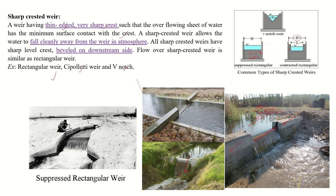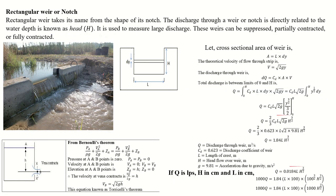In a contracted weir, the total canal width is larger compared to the crest length. A thin, very sharp edge is provided at the crest so that water flows cleanly and freely into the atmosphere, creating a very sharp nappy. A slight angle or slope is provided on the downstream side. These are the rectangular weir, Cipolletti weir, and V-notch weir types.